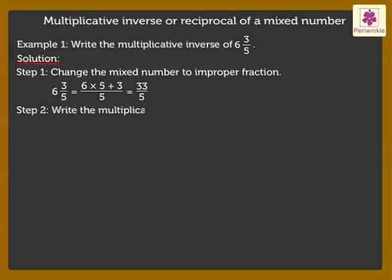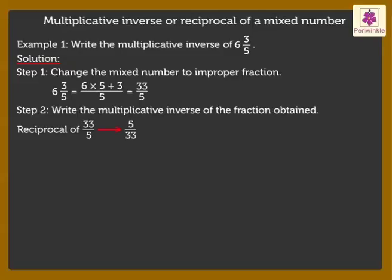Next, we write the Multiplicative Inverse of 33 upon 5 is 5 upon 33.